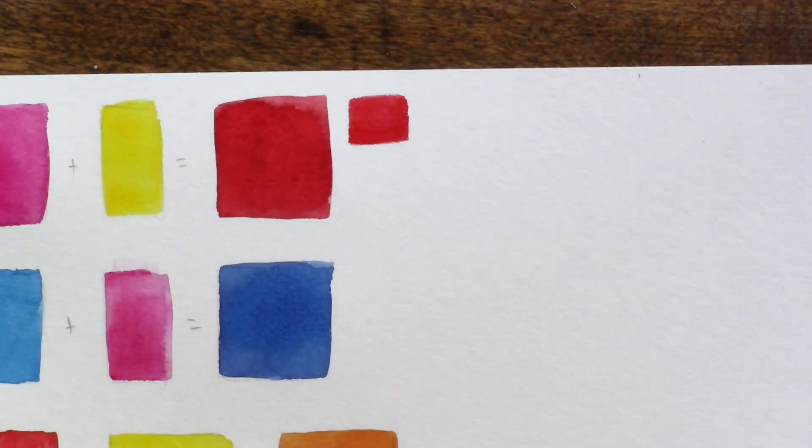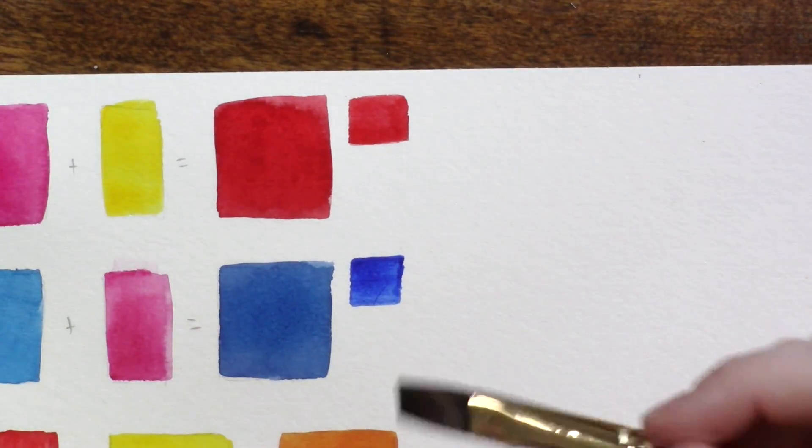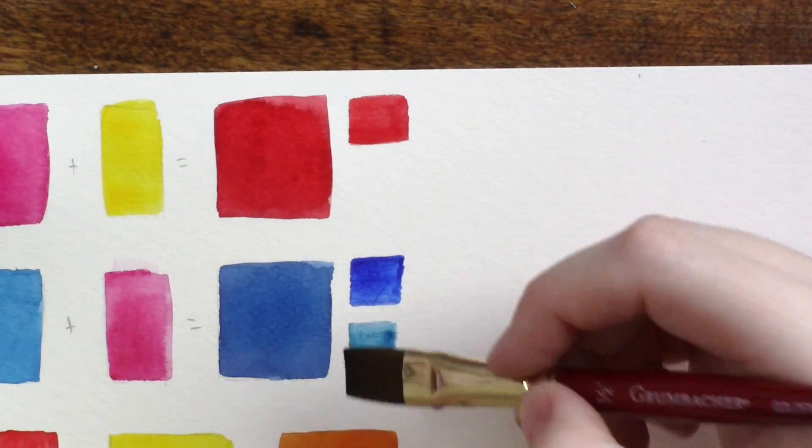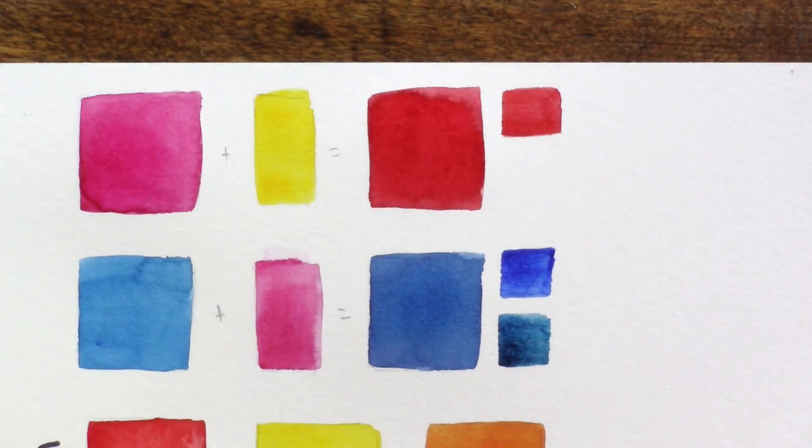This isn't perfect because my camera is recording them differently, as we talked about in the mixing purple video where we discussed light, cameras, and screens. But they are directly next to each other so you can see that the color I mixed with magenta and yellow lies somewhere between a Pyrrole Red and a Carmine—those are my warm and cool reds.